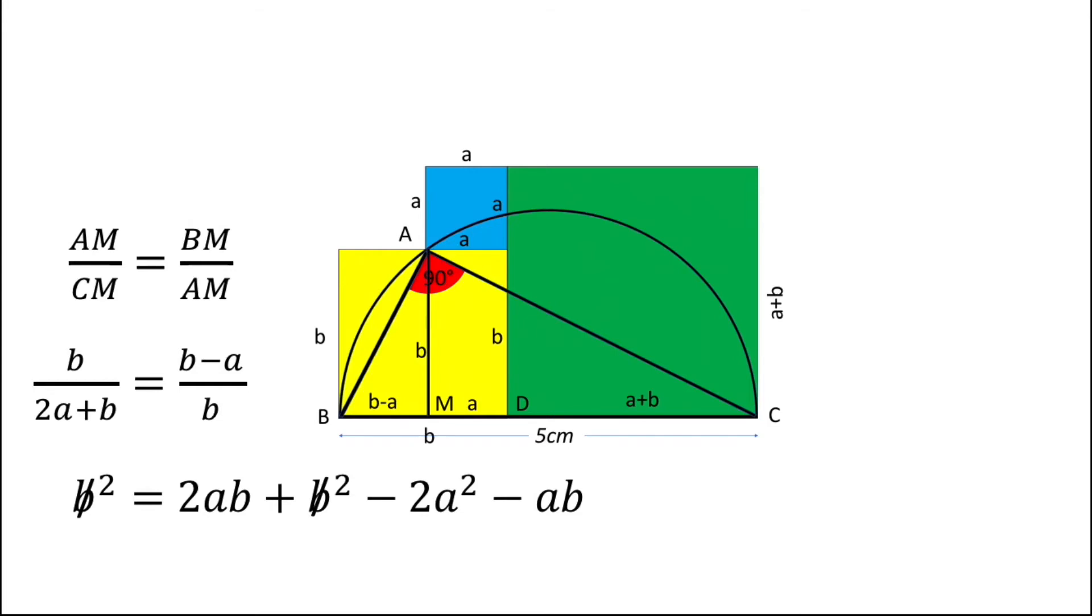2ab minus ab will give you ab. And if you simplify this expression we can simply obtain 2a is equal to b.